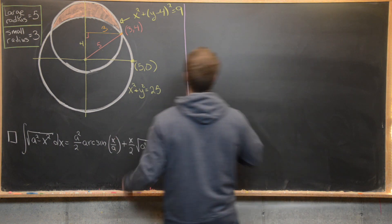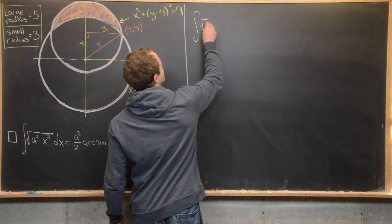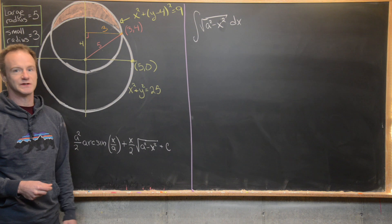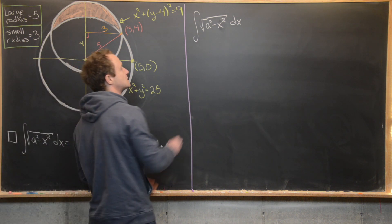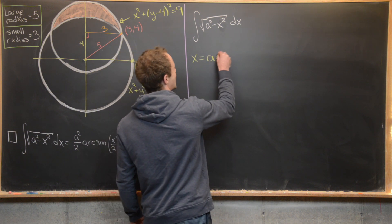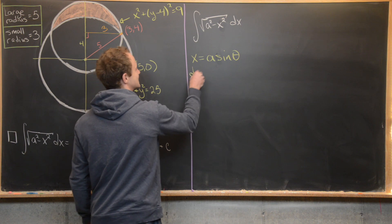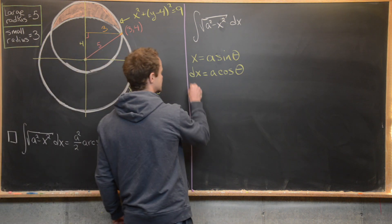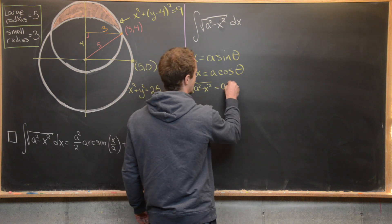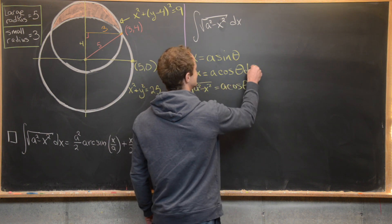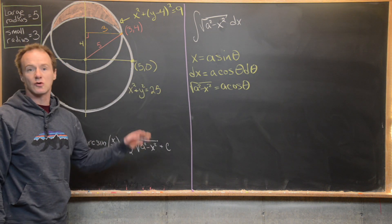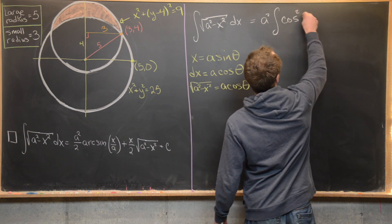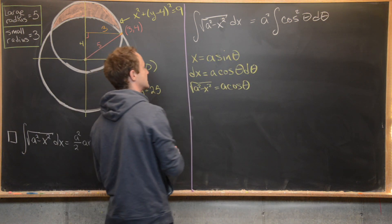I'll write down the integral of √(a² − x²) dx. This type of function is usually integrated with a trig substitution, specifically x = a·sin(θ), which means dx = a·cos(θ)·dθ. That also means √(a² − x²) = a·cos(θ). So we can rewrite this integral as a²·∫cos²(θ)·dθ, taking the a² out as a constant.